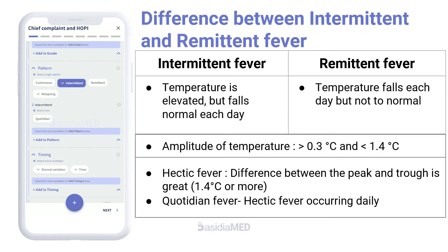With intermittent fever, the temperature is elevated but falls to normal or subnormal each day, while in a remittent fever, the temperature falls each day but not to normal. In these two patterns, the amplitude of temperature change is more than 0.3 degrees Celsius and less than 1.4 degrees Celsius. Either of the two patterns can be called hectic when the difference between peak and trough temperature is great — 1.4 degrees Celsius or more. Quotidian fever is a hectic fever occurring daily.